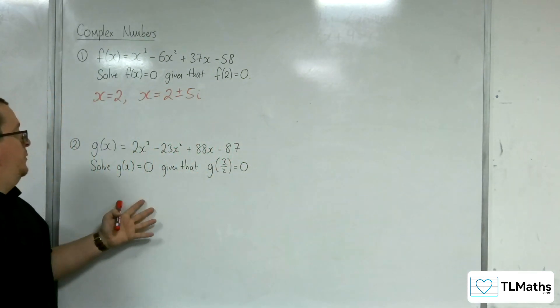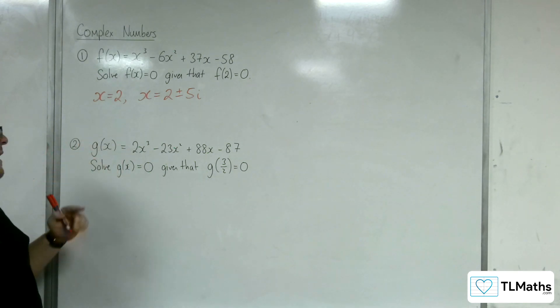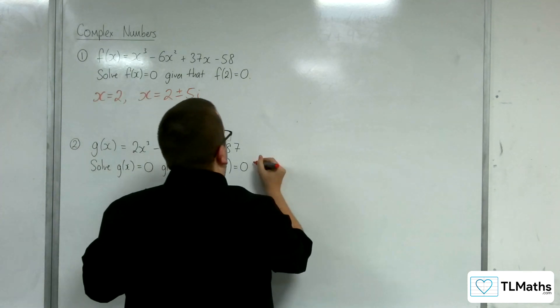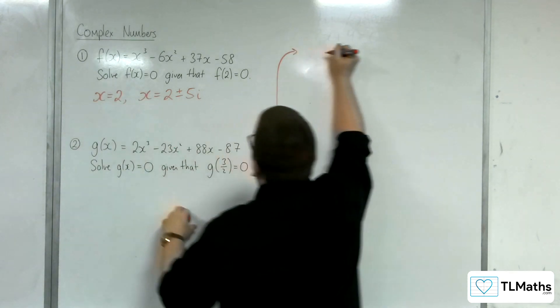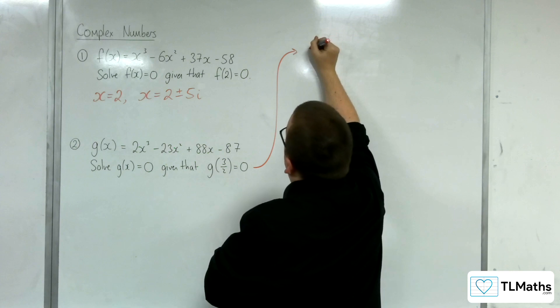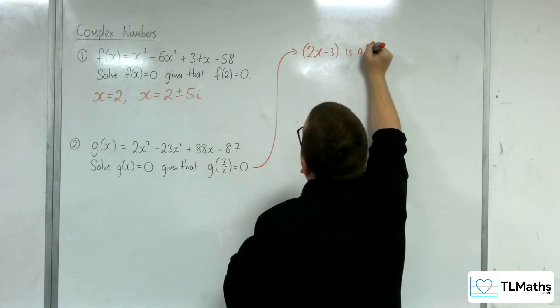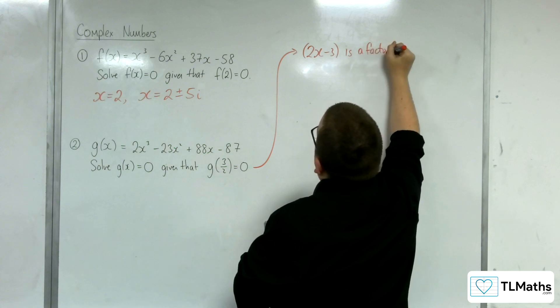Let's have a look at number 2. So, this time we've got another cubic. We now know that g(3/2) = 0. So, by the factor theorem, this means that (2x - 3) is a factor of g(x).